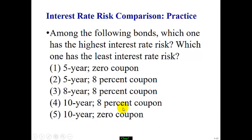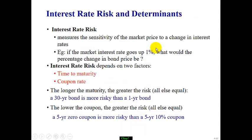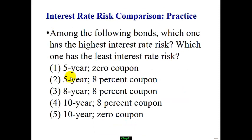Let's look at five different bonds and find out which one has the highest interest rate risk. Recall we have two factors: the longer the maturity and the lower the coupon rate, the higher the interest rate risk. For the highest interest rate risk, we look for the longest maturity — 10-year — and the lowest coupon rate — zero coupon. So bond number five has the highest interest rate risk.